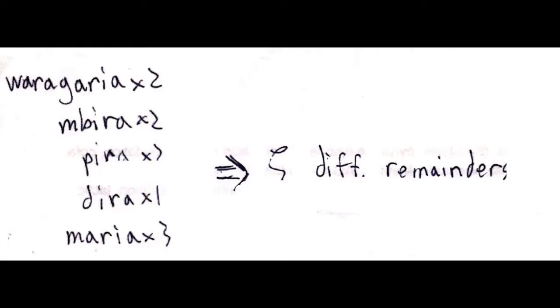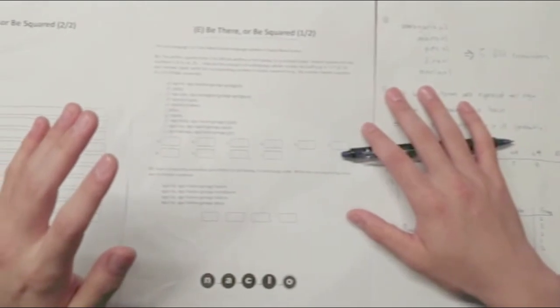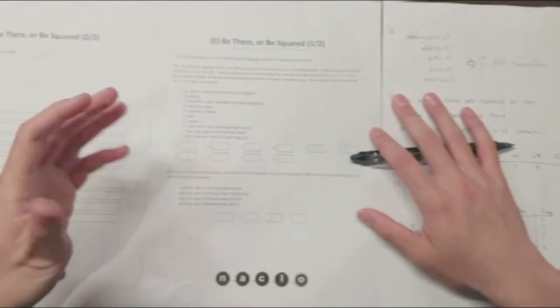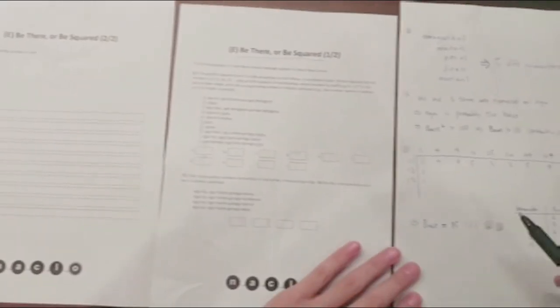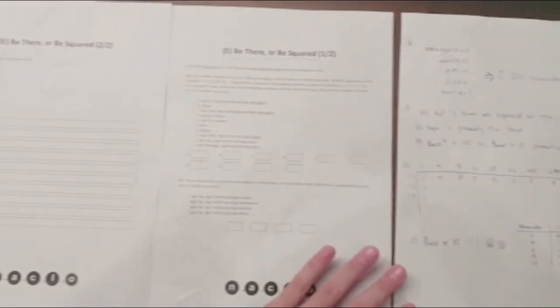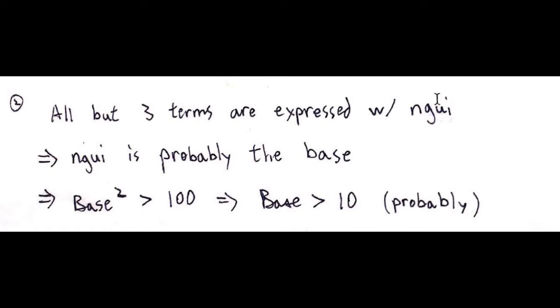So now we have these five remainders with these frequencies. What you have to do is you just have to take the 10 numbers and divide by possible bases and look at the remainders until you get one that matches. I also had a separate step where I reasoned out that the base is probably larger than 10, but in the interest of time, I'm gonna skip that.